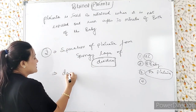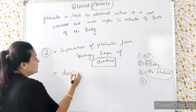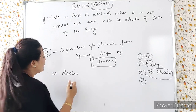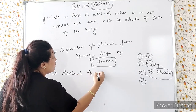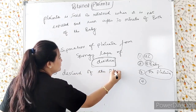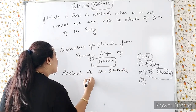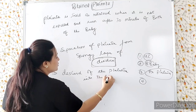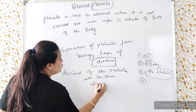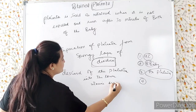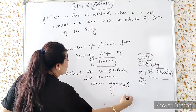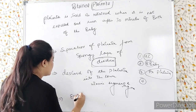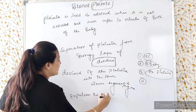The first part is the separation of the placenta. The second is descent — descent means coming in the lower direction, into the lower uterine segment and vagina. The third is expulsion to the outside.